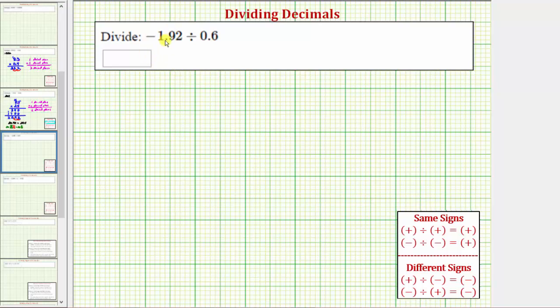We're asked to divide. We have negative 1.92 divided by 0.6, or negative 1 and 92 hundredths divided by 6 tenths. Let's first determine the sign of this quotient. Because we have a negative divided by a positive, the quotient is negative.